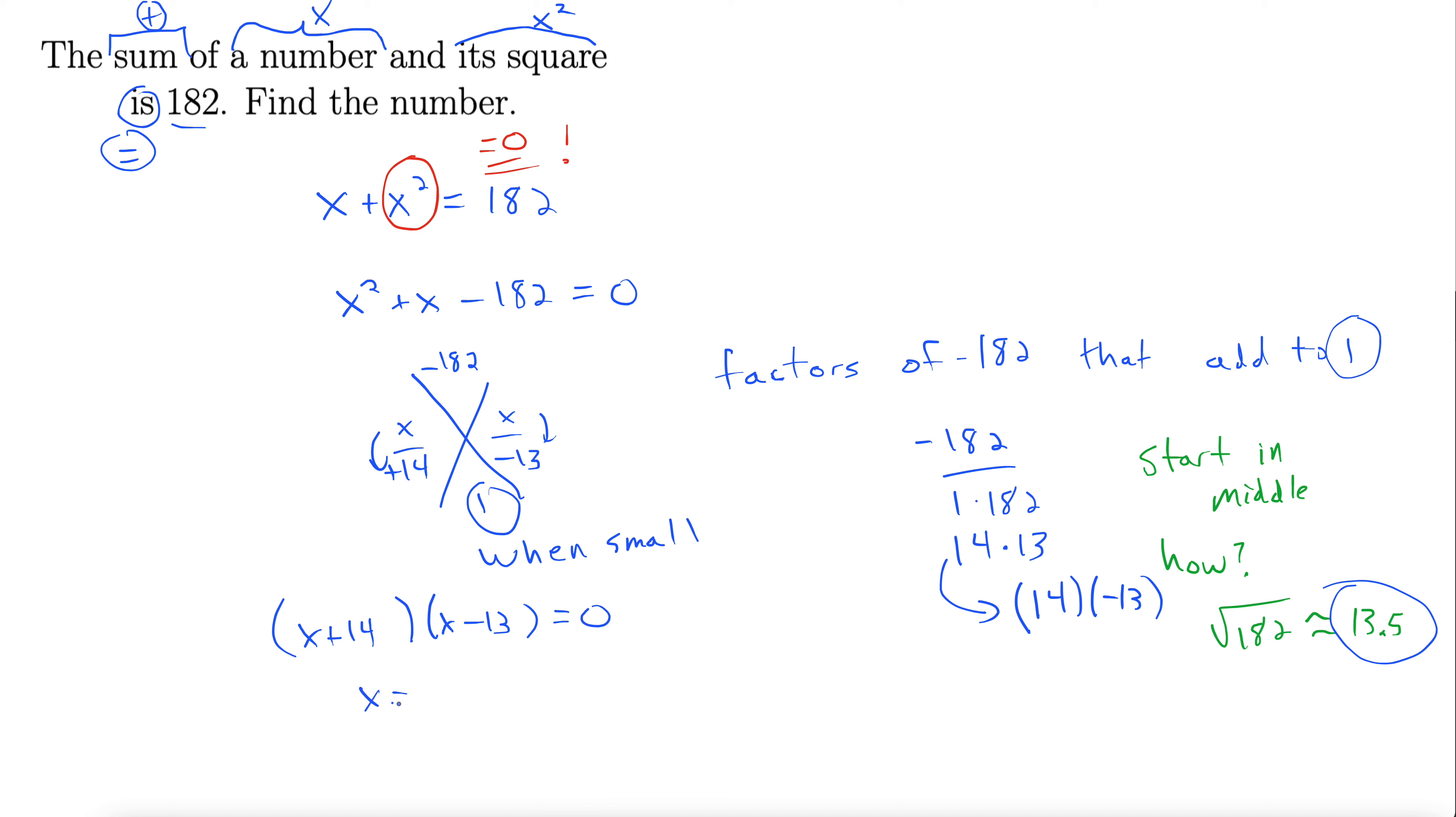So that gives us x equals negative 14. I'm setting each one of these equal to zero. And we have x equals 13. So it looks like this has two answers. The sum of a number and its square equals 182. Can it be possible? Yeah, test it out, and you'll see that is indeed the case. So we have two answers here. This works for negative 14 and for 13.